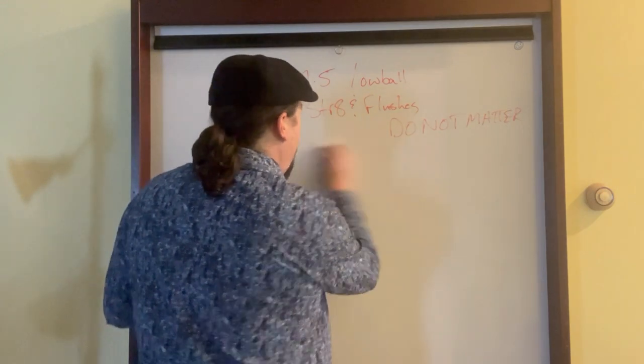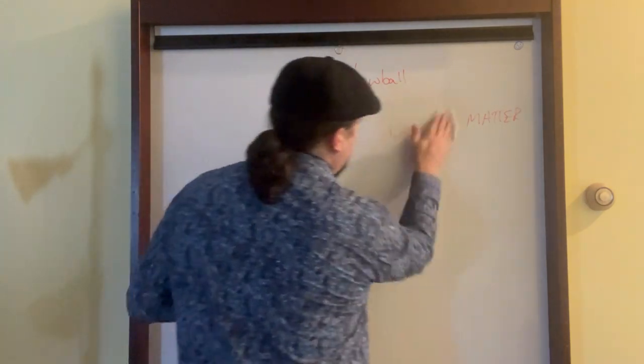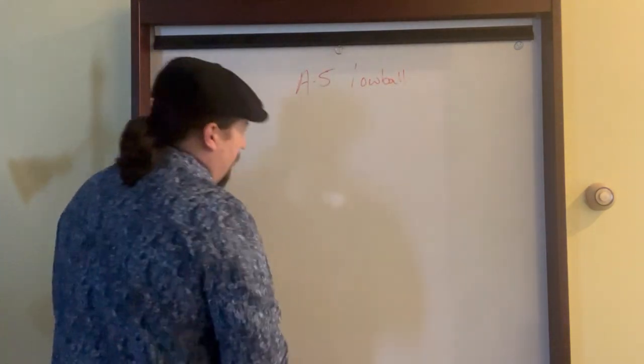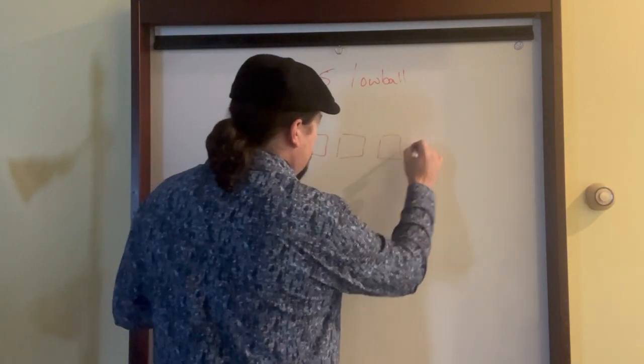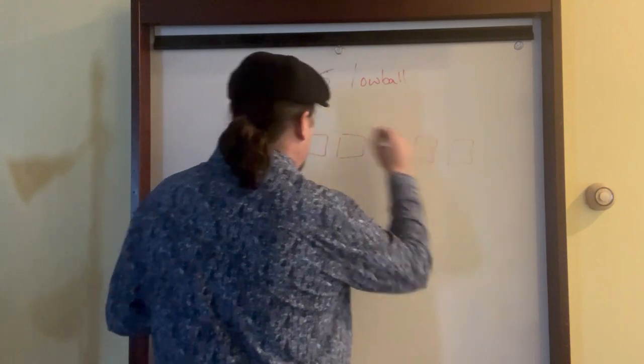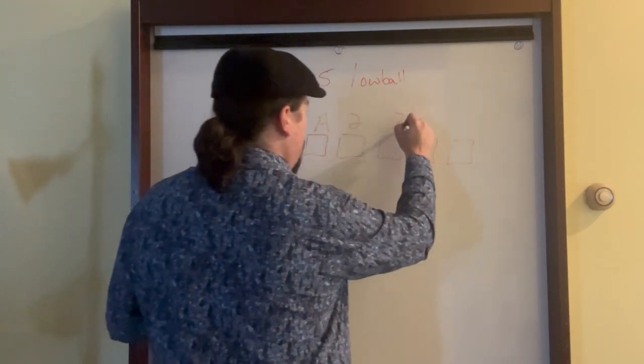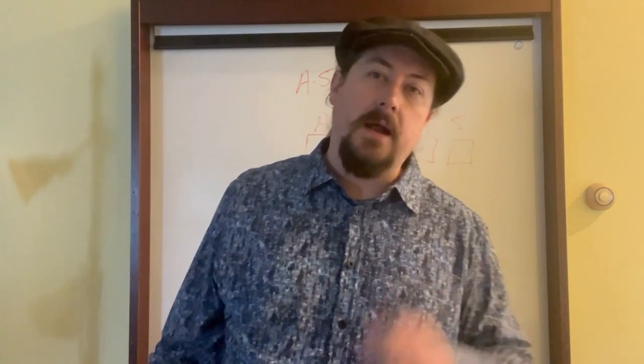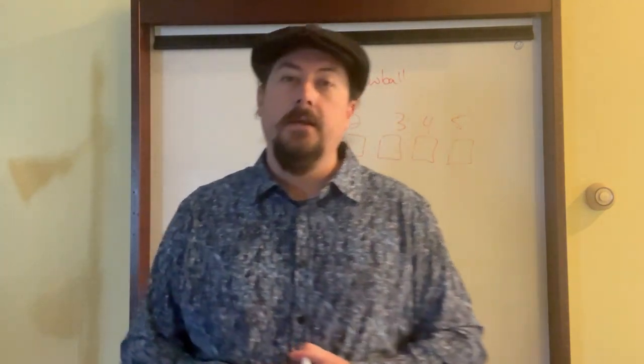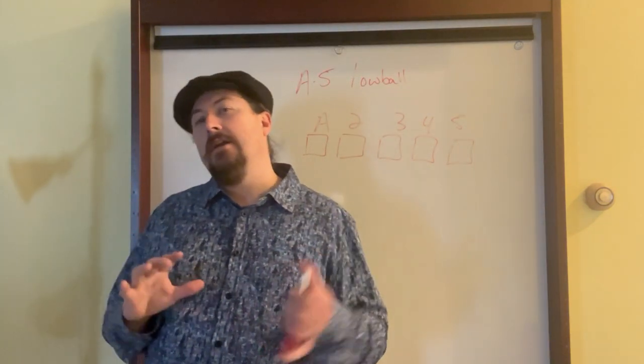So how ace to five lowball works, very similar to deuce to seven, is you get five cards, and the nuts, you guessed it, is ace deuce three four five, because straights don't count. You're trying to get the absolute lowest possible hand you can possibly get.